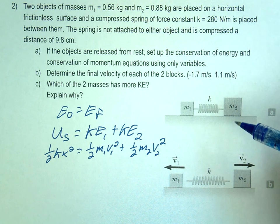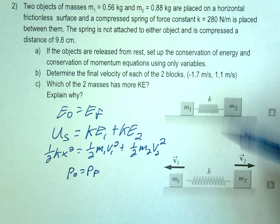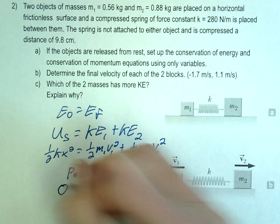So before I let go of this, let's write that out. P initial equals P final. Before I let this go, how much momentum do we have? Zero. Zero. So starting momentum is zero.